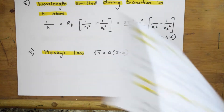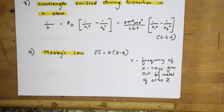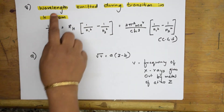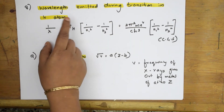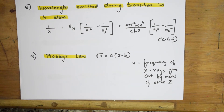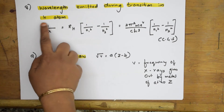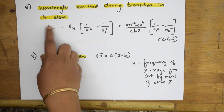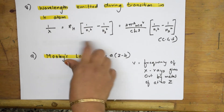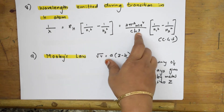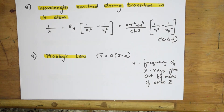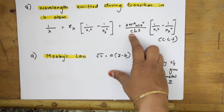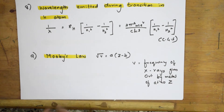For wavelength calculation during transition in a hydrogen atom, the formula uses the wave number: 1/λ = ν̄ = R_H × (1/n1² - 1/n2²), where R_H is the Rydberg constant. I've already done numericals with this. This can also be expanded in CGS units by substituting R_H = 2π²me⁴ / (h³c), where m is mass, c is velocity of light, and h is Planck's constant.